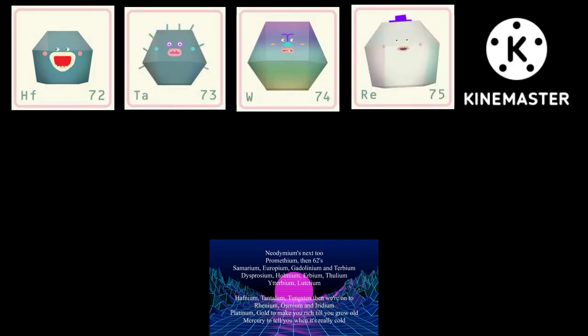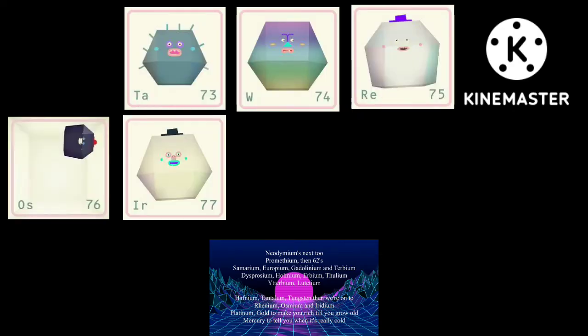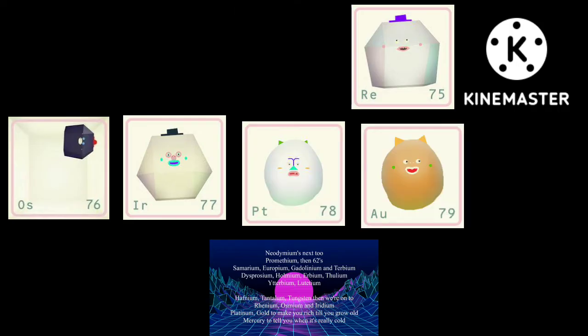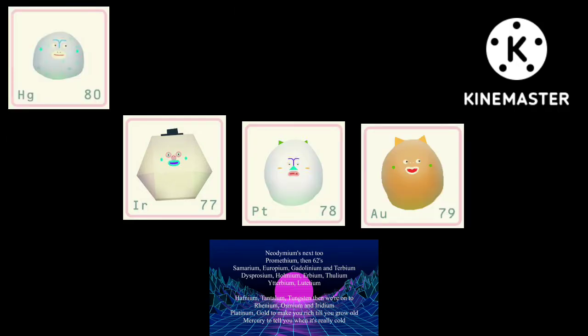Hafnium, tantalum, tungsten, and then we're on to rhenium, osmium and iridium, platinum, gold to make you rich till you grow old, mercury.